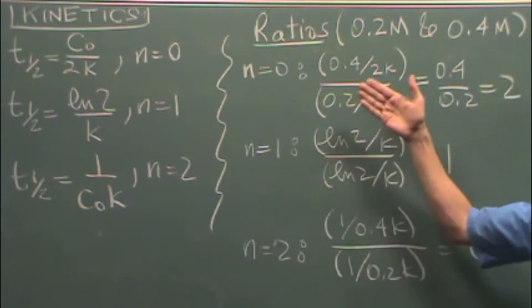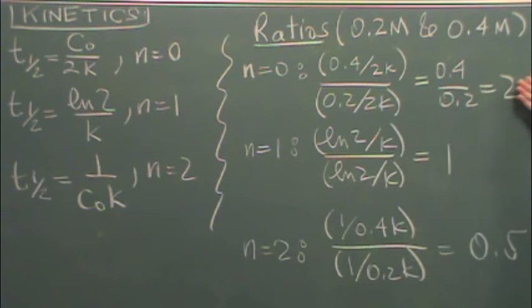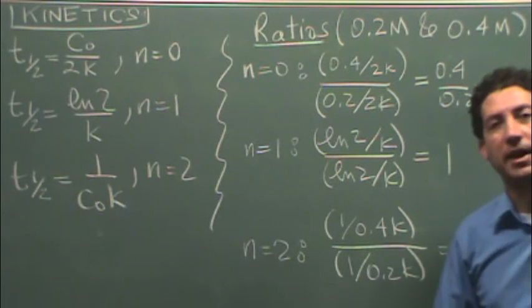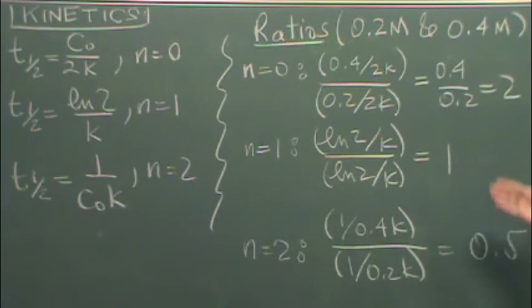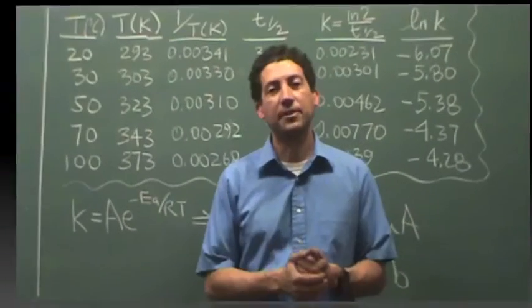So based on your numbers that you get, you can tell if it's going to be zero, first, or second order when you put in the ratios and you measure the half-life. So you get the same half-life, is one twice as much as the other, or is one half as much as the other?